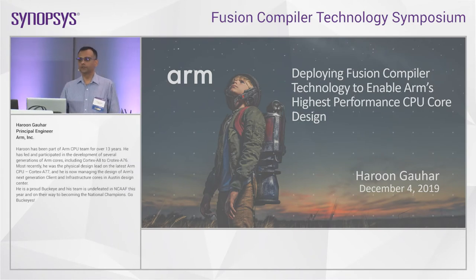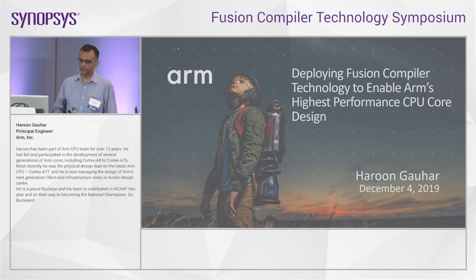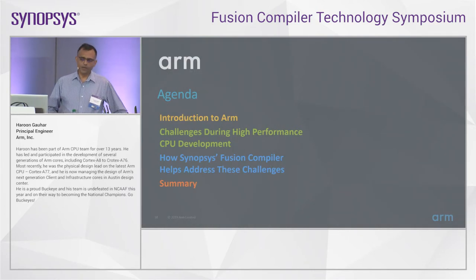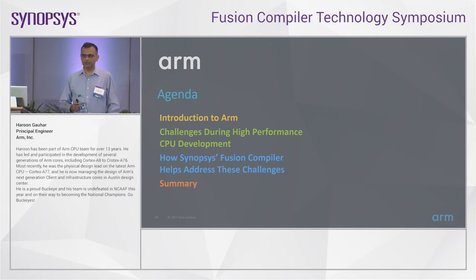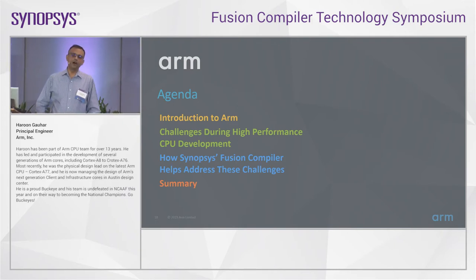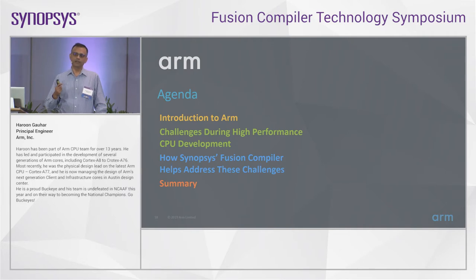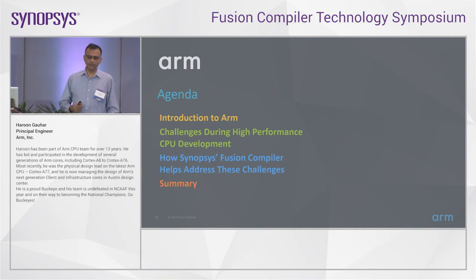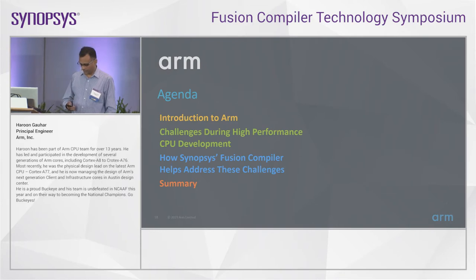I'm here to talk about how Fusion Compiler technology has helped us on our high-performance CPU code design using some of the advanced techniques in Fusion Compiler. I'll go through some details in my presentation. I'll start off with a quick introduction to ARM, then go into some of the unique challenges that are there for our group in ARM — challenges that may not apply to customers who actually tape out. But for companies like us who are in the business of producing RTL IP and shipping it out to customers, it's very important. We'll see how Fusion Compiler helps address those challenges, and then summarize at the end.